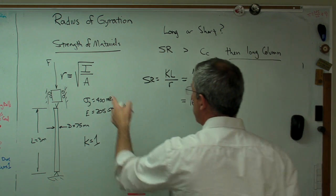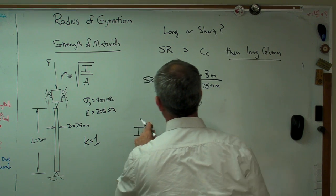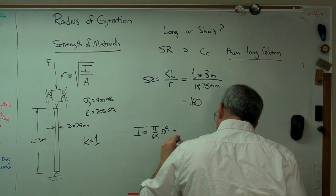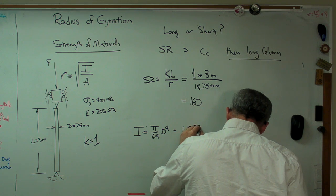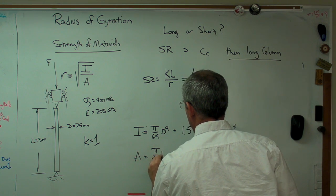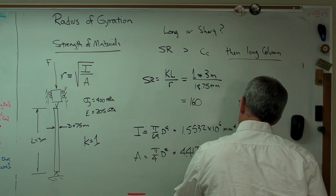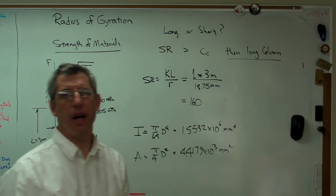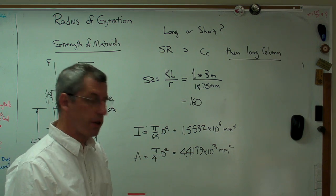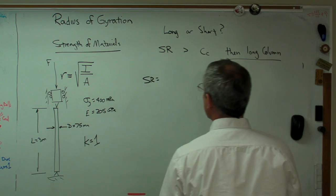Now, just to back up here a second, I for this is pi over 64 d to the 4th. And for this case, we get 1.5532 times 10 to the 6th millimeters to the 4th. And A is pi over 4 d squared. And that's 4.4179 times 10 to the 3rd millimeters squared. Now, I don't have a whole lot of time here. I've got about two and a half minutes left. So I'm going to run through this pretty fast. Okay. But those, you can work these numbers out for yourself. They're pretty straightforward. Okay.